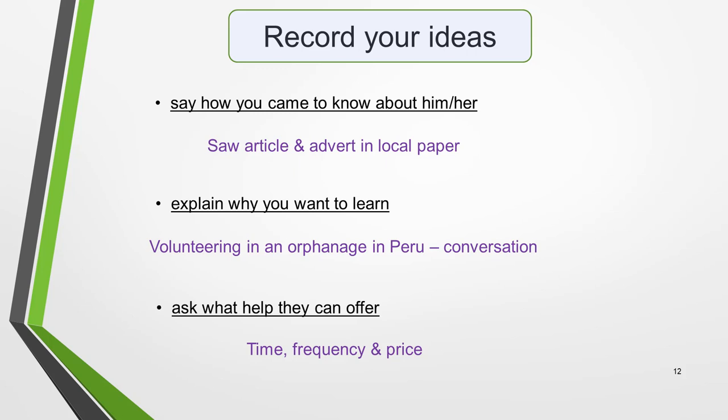Note your ideas beside each bullet point on the exam paper. For 'say how you came to know about him or her,' I've noted: saw an article and advert in the local paper. For 'explain why you want to learn,' I've put: volunteering in an orphanage in Peru — conversation. And for 'ask what help they can offer,' I've jotted down: time, frequency and price. That's our planning complete. Once you've had some practice, you'll be able to do this in just a few minutes. Taking time to plan makes writing IELTS letters far quicker and easier, and you'll get higher marks.